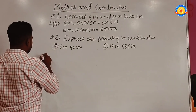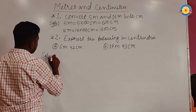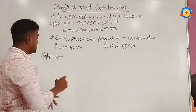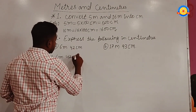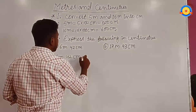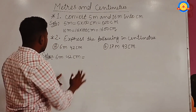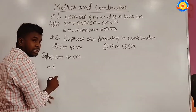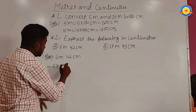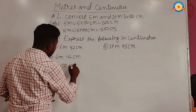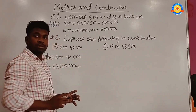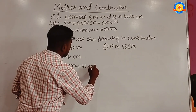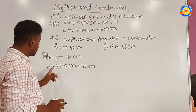First we write 6 meters 42 centimeters. We have 42 centimeters already. For the meters part, we do 6 into 100 centimeters.